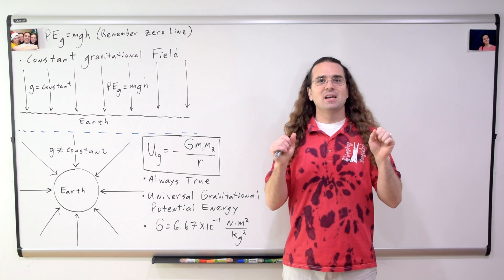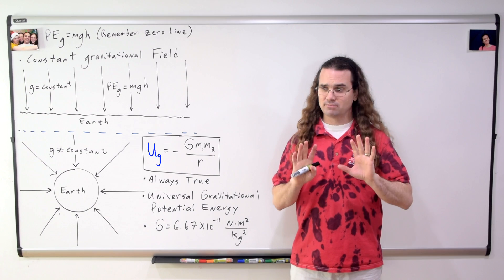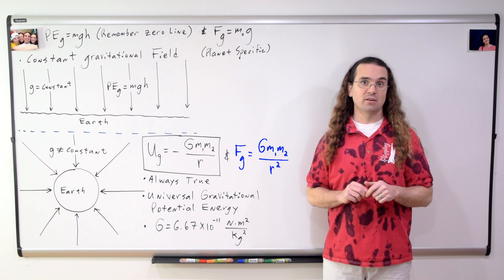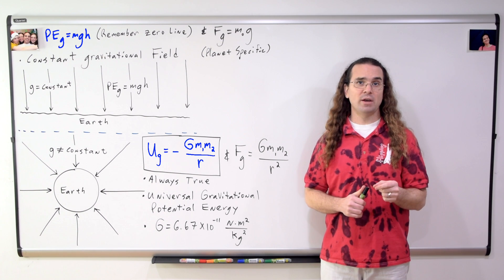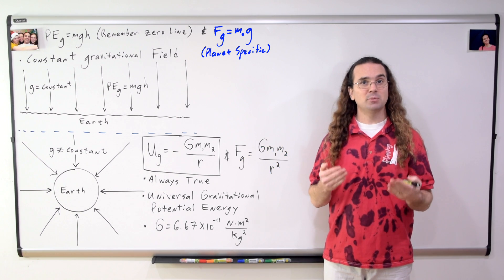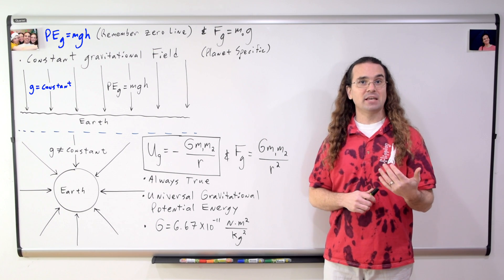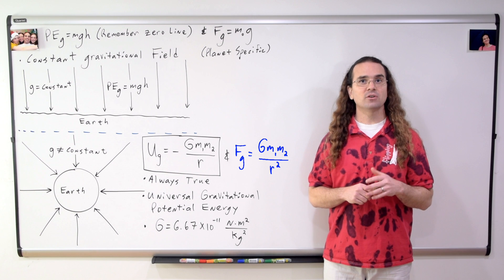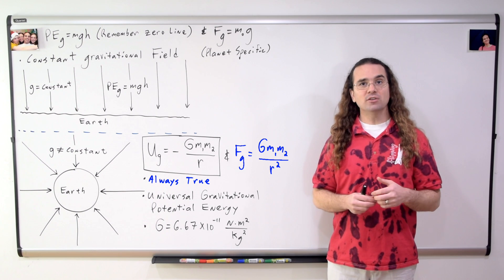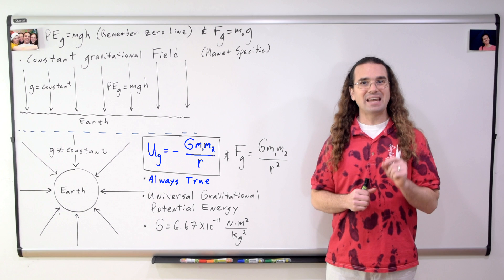One thing at a time. I use capital U sub G for universal gravitational potential energy because that is what is typically done — I don't know why it's a capital U. The equation for universal gravitational potential energy is not Newton's universal law of gravitation; however, it is similar. We have an equation for the force of gravity which is planet specific, valid where the acceleration due to gravity is constant, just like we have an equation for gravitational potential energy where the gravitational field is constant. And then we have Newton's universal law of gravitation, the force of gravity which exists between any two objects — an equation we can always use. Now we also have universal gravitational potential energy, which is the equation we can always use for the gravitational potential energy which exists between any two objects.